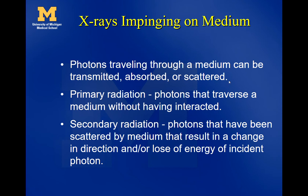So a photon can be transmitted, absorbed, or scattered in a different direction. We call the primary radiation the photons that traverse a medium without having interacted — those getting through untouched. Secondary radiation refers to photons scattered by the medium, like x-rays produced by positron annihilation in pair production or Compton-scattered x-rays going in a new direction. The secondary beam scatters x-rays uniformly away from the interaction point, whereas the primary beam comes straight from the x-ray source.